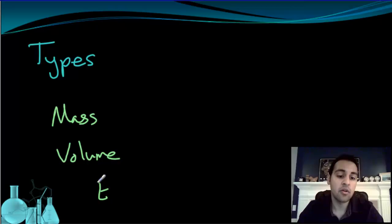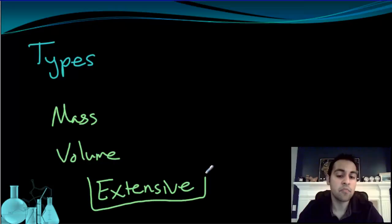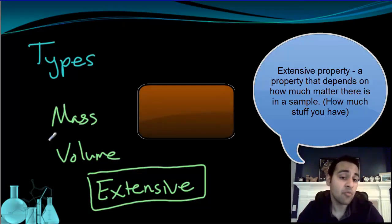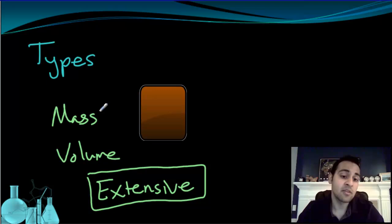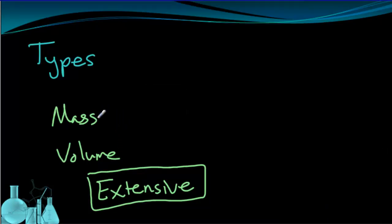These are going to represent our first type of property. These are both what we call extensive properties. Mass and volume are both examples of extensive properties. Now an extensive property is a property that depends on how much of a substance there is. If I take a block of wood, it has a particular mass and volume. However, if I cut that block of wood in half, I now have less. So the mass is going to go down. The volume is going to go down. And those two properties have changed because the amount of substance that I'm looking at has also changed. So these two things depend on how much of the substance there is.